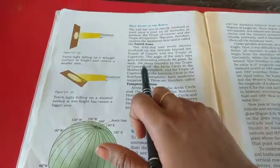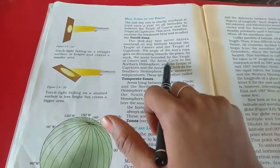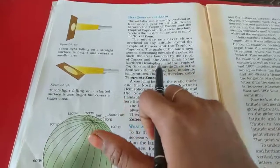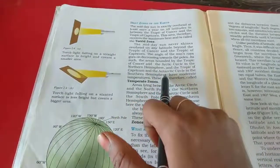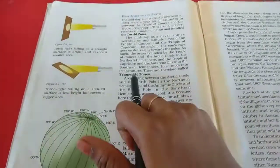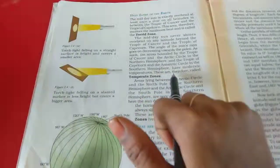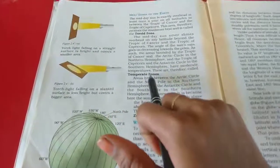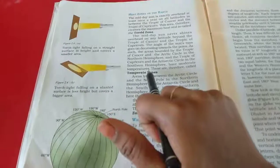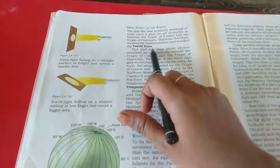The angle of the sun's rays goes on decreasing towards the poles. As such, the areas bounded by the Tropic of Cancer and the Arctic Circle in the northern hemisphere and the Tropic of Capricorn and the Antarctic Circle in the southern hemisphere have moderate temperatures. These are therefore called temperate zones. So temperate zone we receive less heat. For the Torrid zone we receive maximum heat.